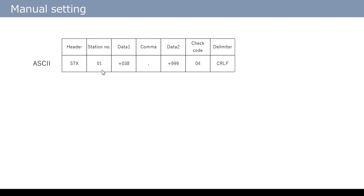Next, the station number is specified. Then, two data values called data1 and data2 are specified. Between the values, a comma is used. There is a check code, not a comma, after the second data value.